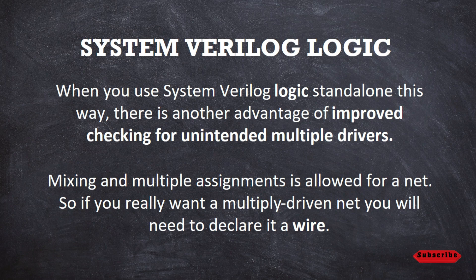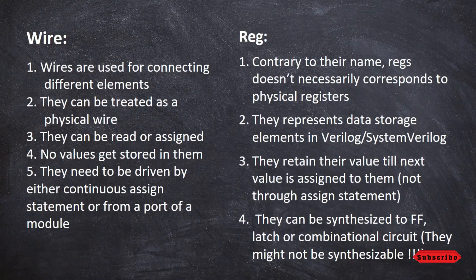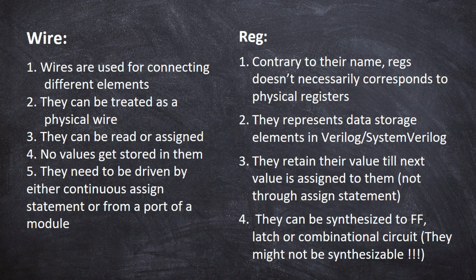Let's take a short summary of this video. Wires are used for connecting different elements and are treated as a physical wire. Wires can be read and assigned but no values are stored in them. They need to be driven by either a continuous assignment or from a port of a module. Registers can represent a storage element. If you hold a value until you assign a new value, it will retain the value.